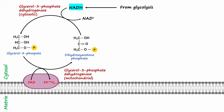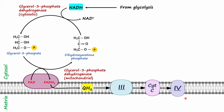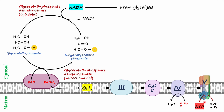When electrons are passed on to FAD, it is reduced to FADH2. FADH2 then passes these electrons to electron carrier Q, which is reduced to QH2. Electrons from QH2 then transfer to Complex III, then cytochrome C, then Complex IV. Finally, the electrons are transferred to the final electron acceptor, oxygen. During this process, protons are pumped out from the mitochondrial matrix into the intermembrane space, and these protons pass through Complex V, also called ATP synthase, to phosphorylate ADP and synthesize ATP.